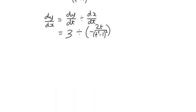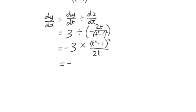We can simplify by bringing the negative sign in front of the 3, since the negative makes the whole thing negative either way. Then we switch from dividing to multiplying and invert the fraction. There's nothing to cancel, which leaves us with the expression: dy/dx = negative 3 times (t² - 1) squared over 2t. Remember, that's an expression for our derivative.